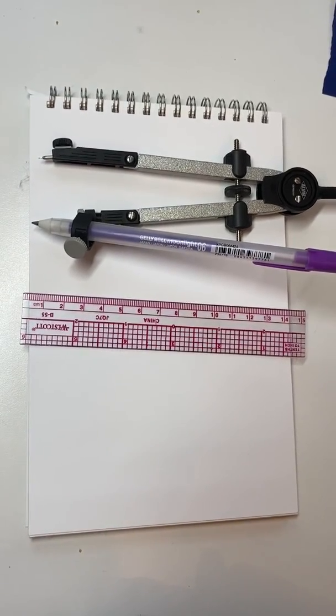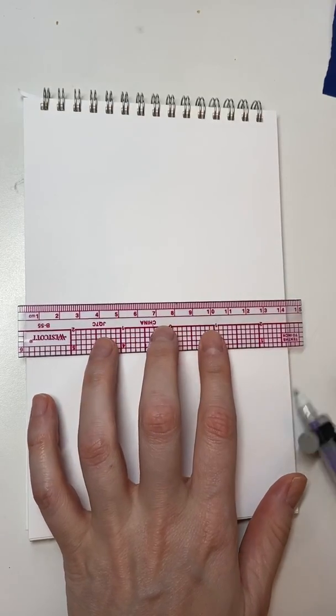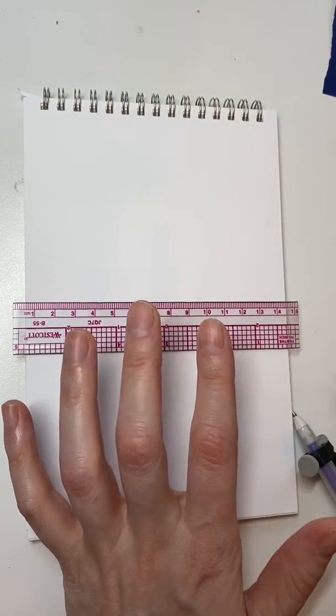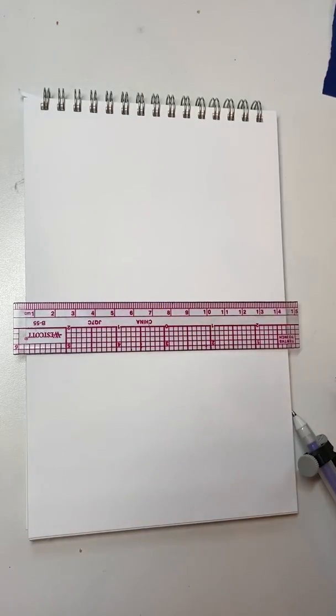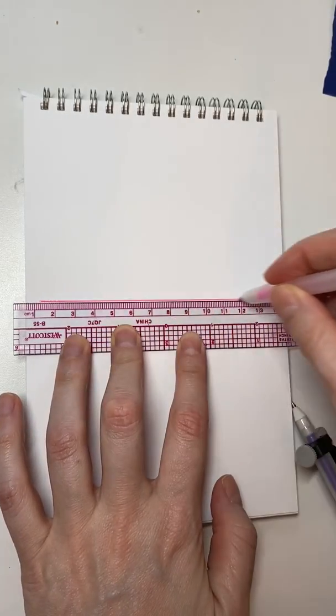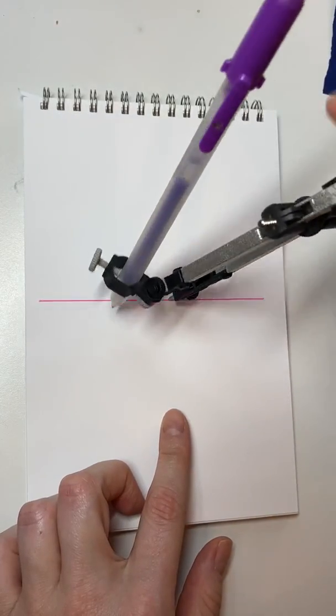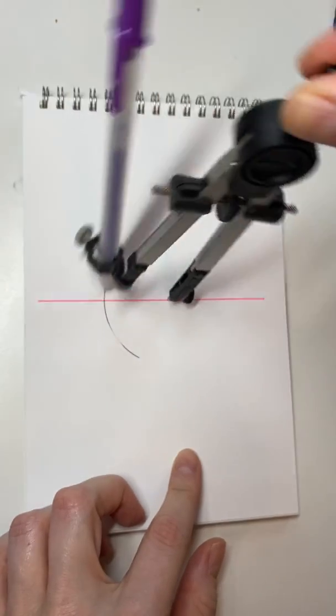Alright, so this is going to be if you have a compass. I'll do another one if you do not. Use a straight edge, doesn't really matter what kind of straight edge you want, and draw a line across the page. Then you're going to place your compass with the point on the line and you're going to draw a circle.